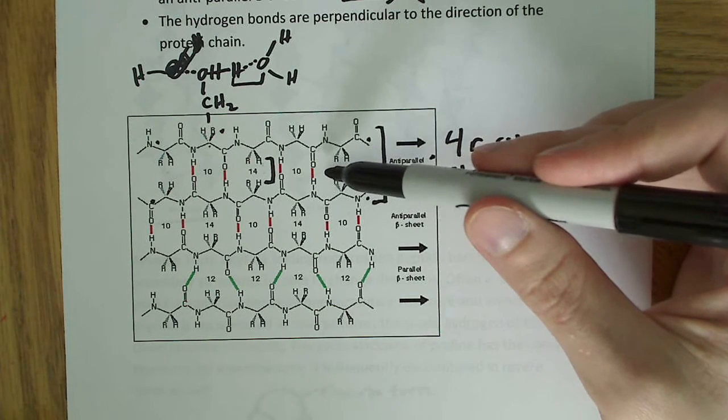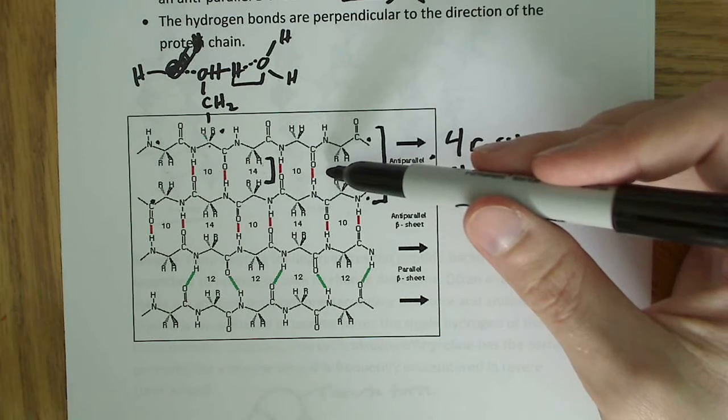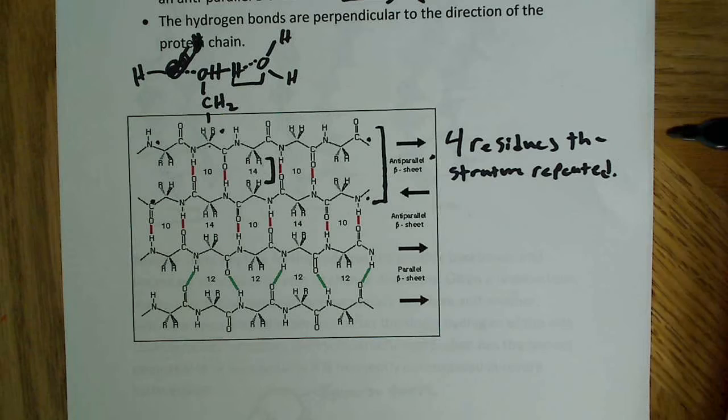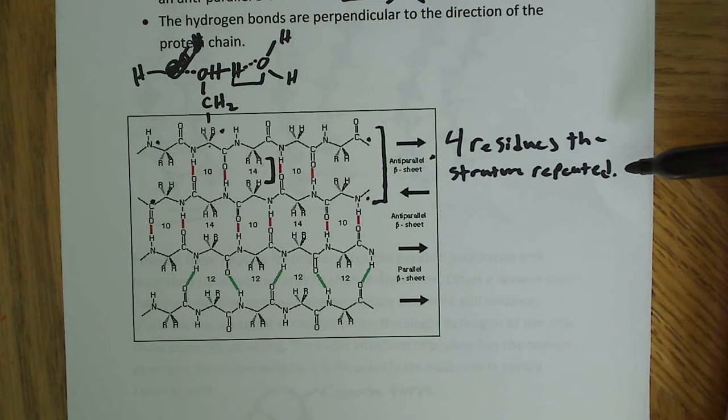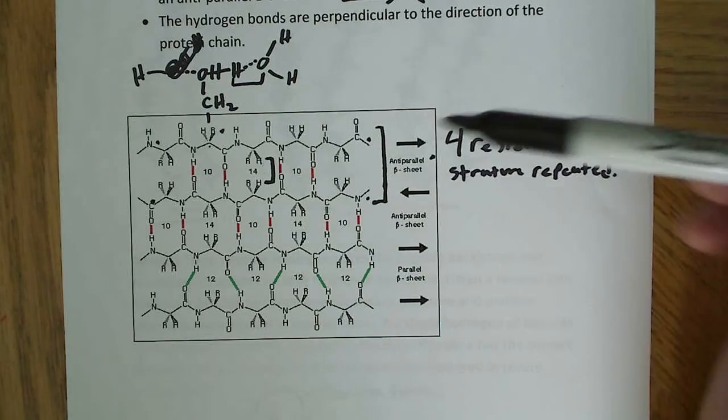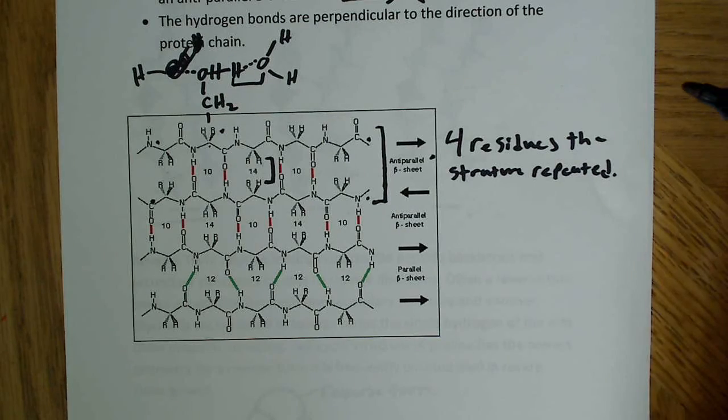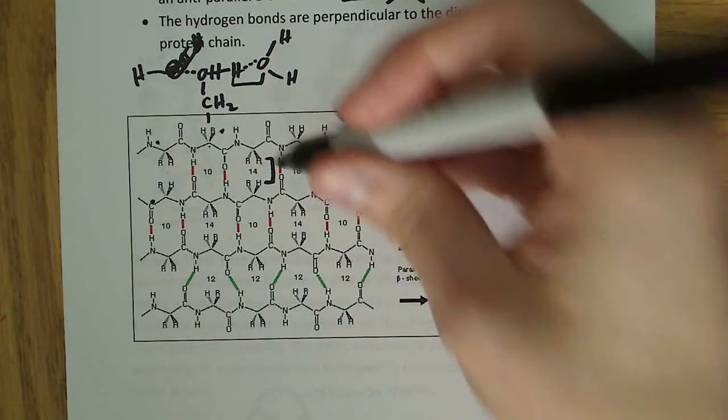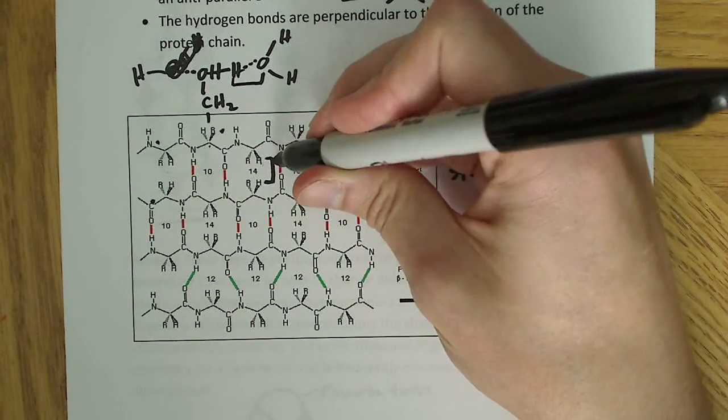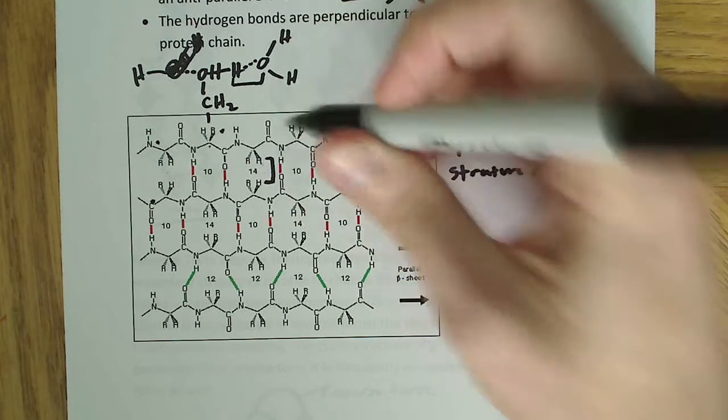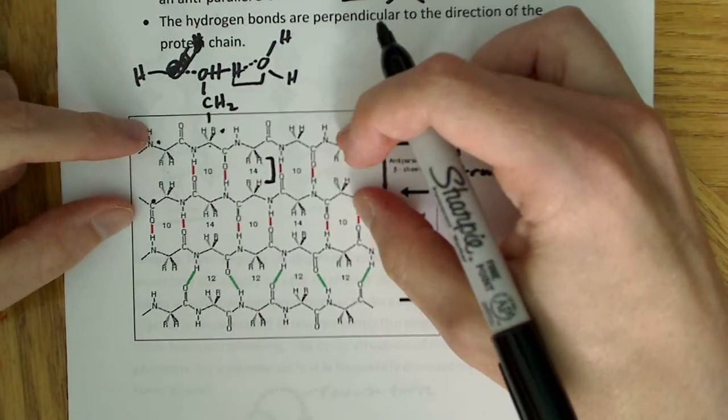Another interesting thing about the beta sheet in general is that with the alpha helix, every four residues the structure repeated. In this one, it's going to be essentially every other one. If we look at these R chains here, we have these R groups and they're both facing inside, both facing inside of these two hydrogen-bonded chains.